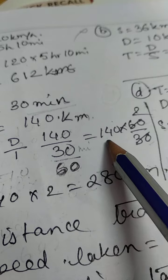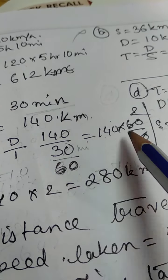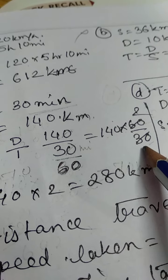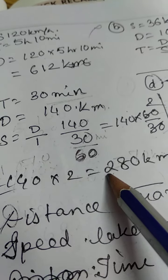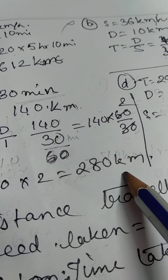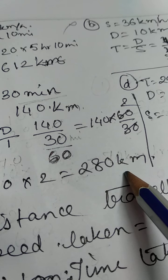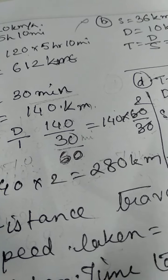So we will take it sidewise. When we are taking it sidewise, you know, 60 is going up, 30 is coming down. So 30 and 60, we can cut 2. So 140 into 2, it will be 180 km per hour. Sorry, not 180 km per hour, it is 280 km per hour.